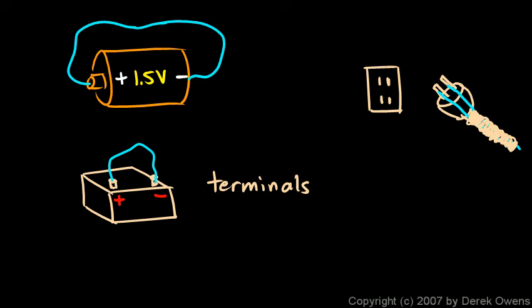The power company provides electrons with a lot of energy on only one side of the outlet — the other side is essentially neutral. Only one side is what we call 'hot,' and the other is simply a place for the electrons to return to when you provide a path by plugging something in.